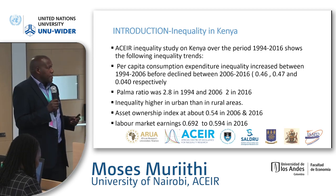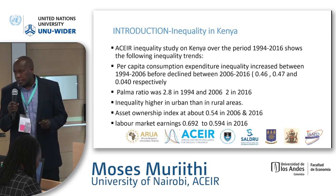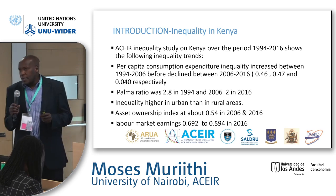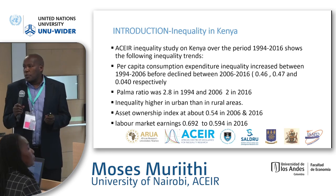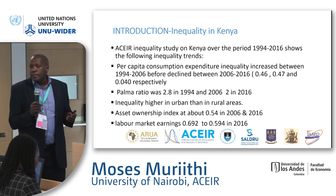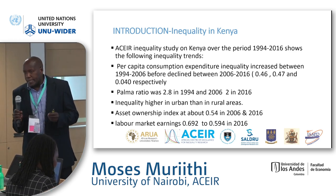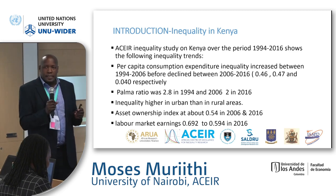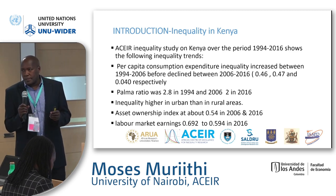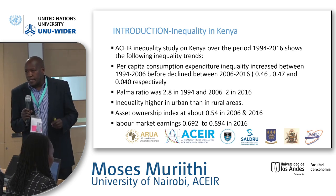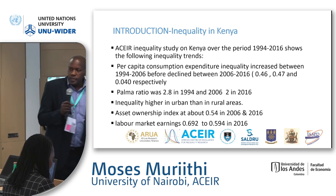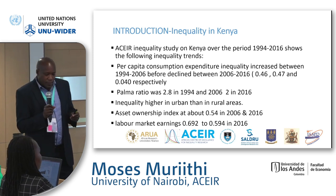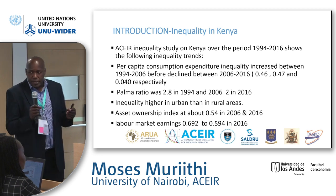Using our KNBS inequality diagnostic measures, we note that Kenya's inequality trends from 1994 to around 2015-2016 showed a mixed pattern. Initially the Gini coefficient was increasing, but around 2015-2016 it started going down. The measure being used here is per capita consumption, which we'll contrast with what we see from the WIID shortly.